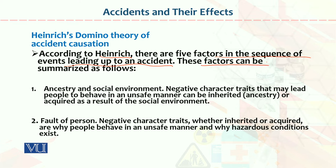These factors can be summarized as follows. Number one: ancestry and social environment. اس کا مقصد یہ ہے کہ جہاں پہ آپ کام کر رہے ہیں اگر اس کا working environment healthy ہے تو accident کے chances کم ہیں، اور اگر working environment healthy نہیں تو accident کے chances زیادہ ہیں۔